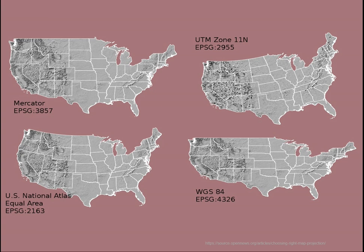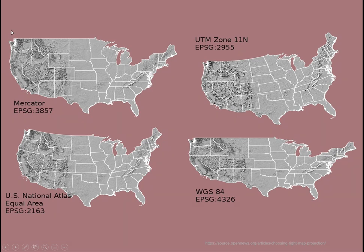Here are some visual examples of what different distortions look like. With Mercator, compare this region to UTM — you can see how the size and shape are very different, even though they are shown at the same scale. For the equal-area projection, notice how that shoreline curves rather than being straight. WGS84, our latitude-longitude system, really stretches out along the 49th parallel and is much more distorted at higher latitudes than Mercator.